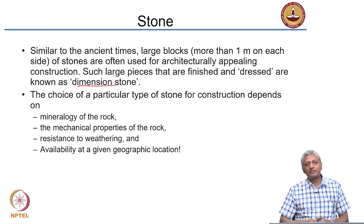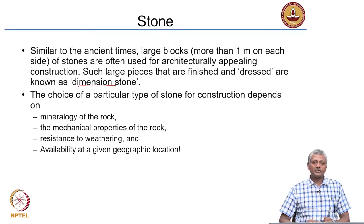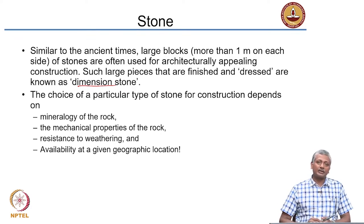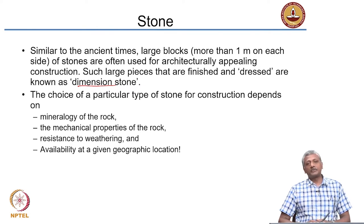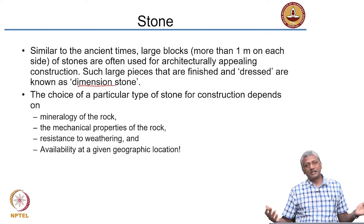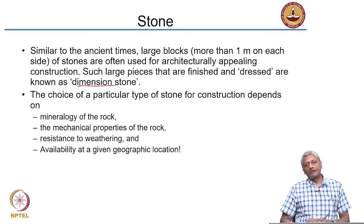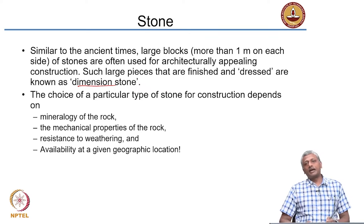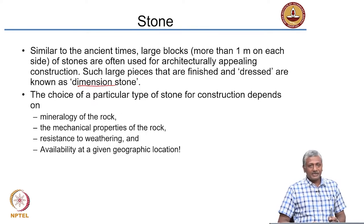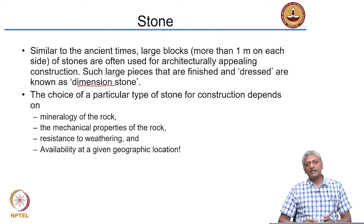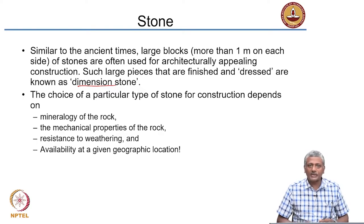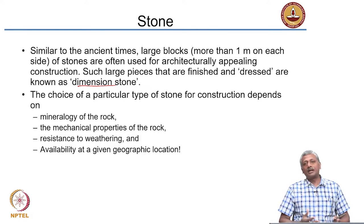People started realizing that productivity improved a lot more by reducing the size of the blocks. If you think about the oldest structures in stone, like the pyramids of Egypt, the stone blocks there are massive — a few meters in size — and it must have taken quite a bit of effort to carry and place them. Today, we can bring advantages by using smaller blocks in different patterns. Even many of our temples and old forts use fairly large blocks, called dimension stones.